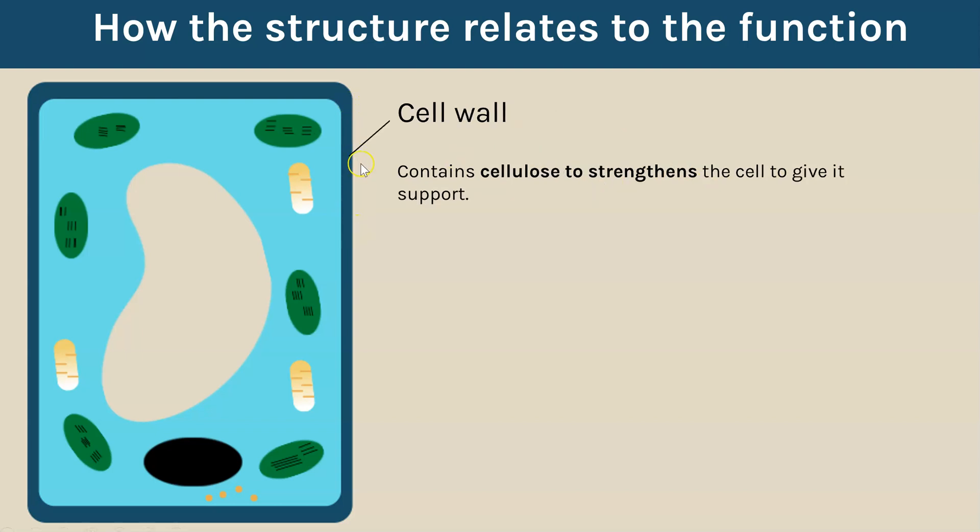The cell wall which you only find in the plant cells, not the animal cells, contains a molecule called cellulose and that molecule makes the cell wall really strong. So it gives the cell support and it's that cellulose cell wall which is really strong which stops the plant cells from bursting if they do swell up with lots of water.